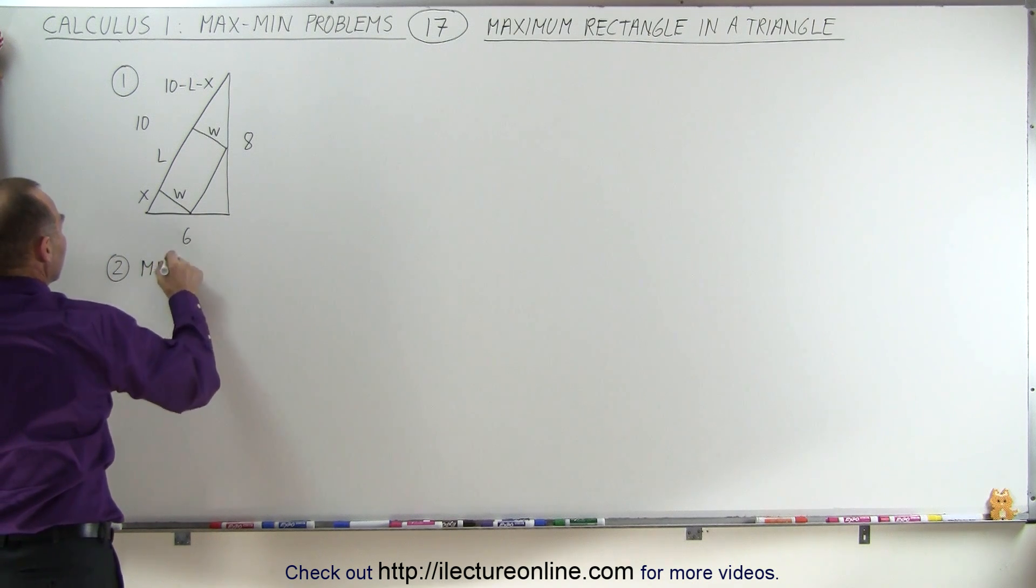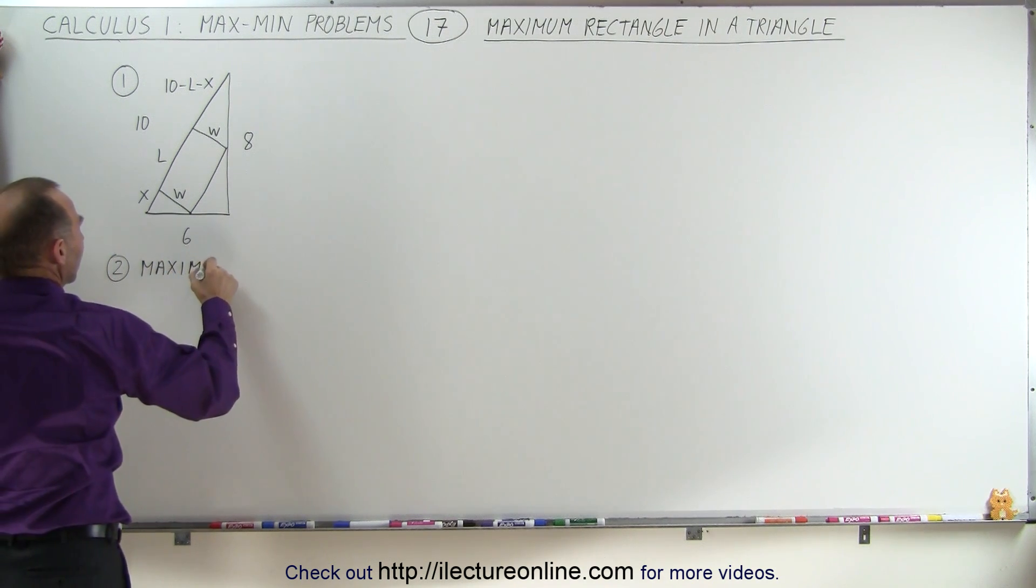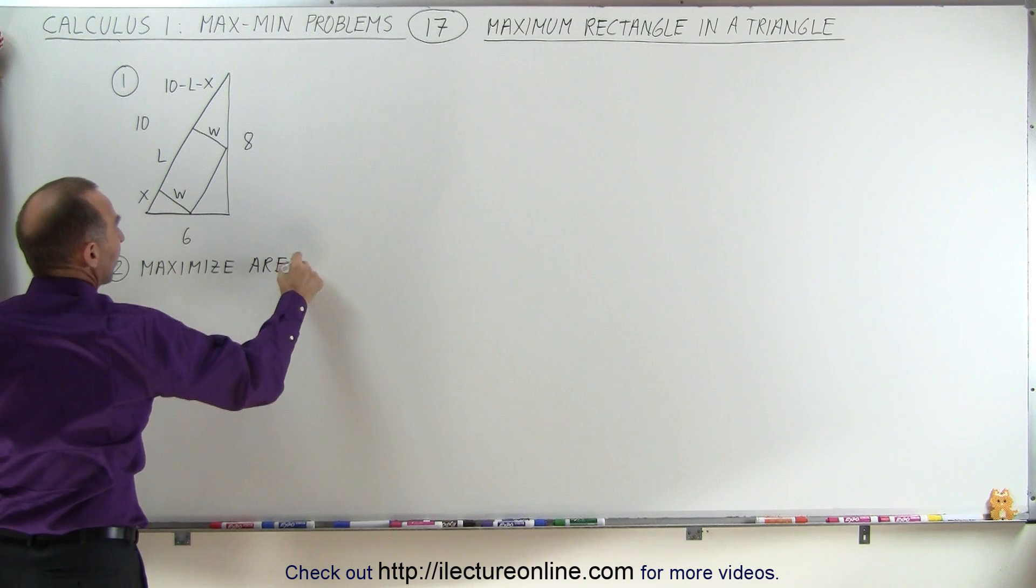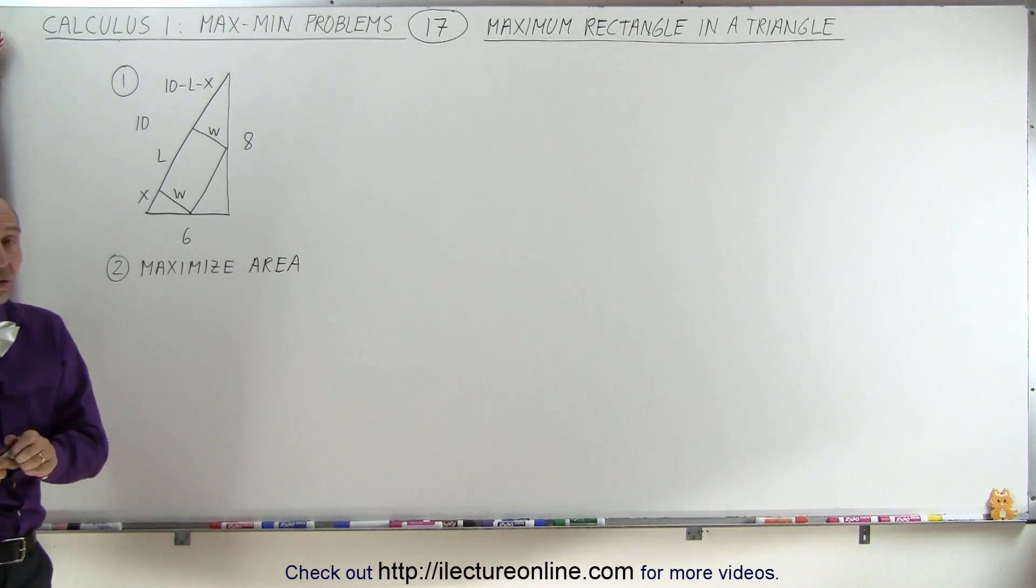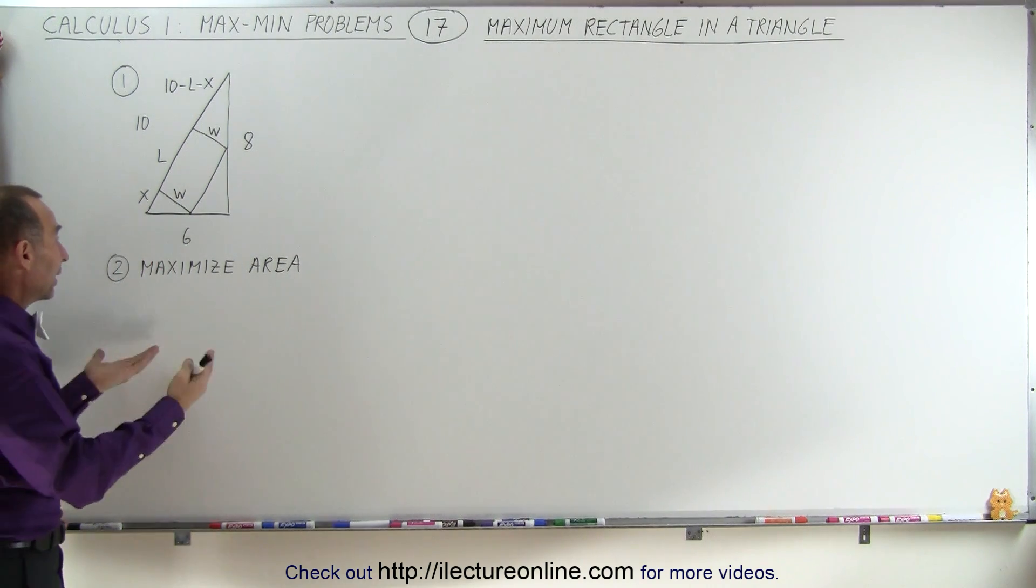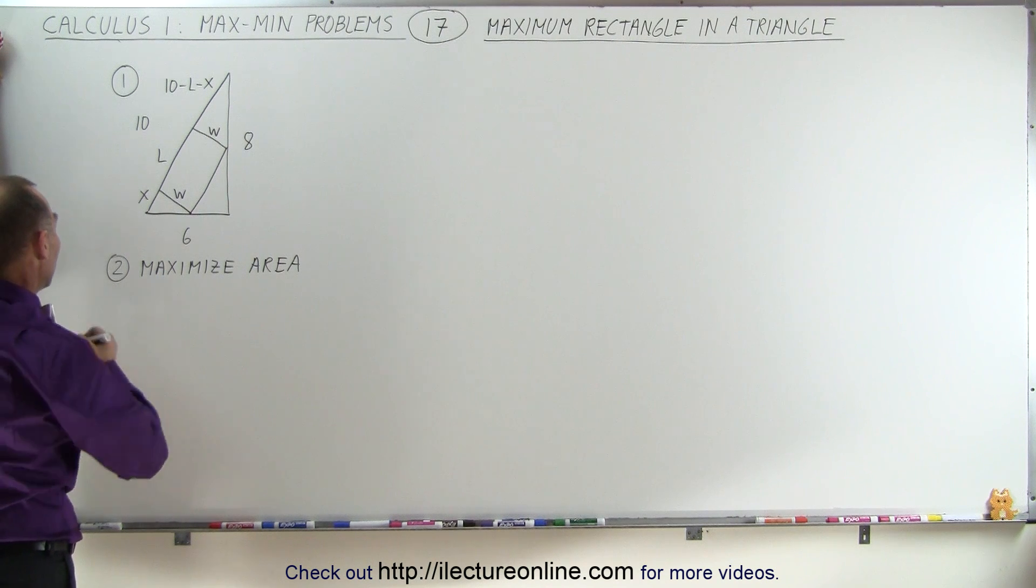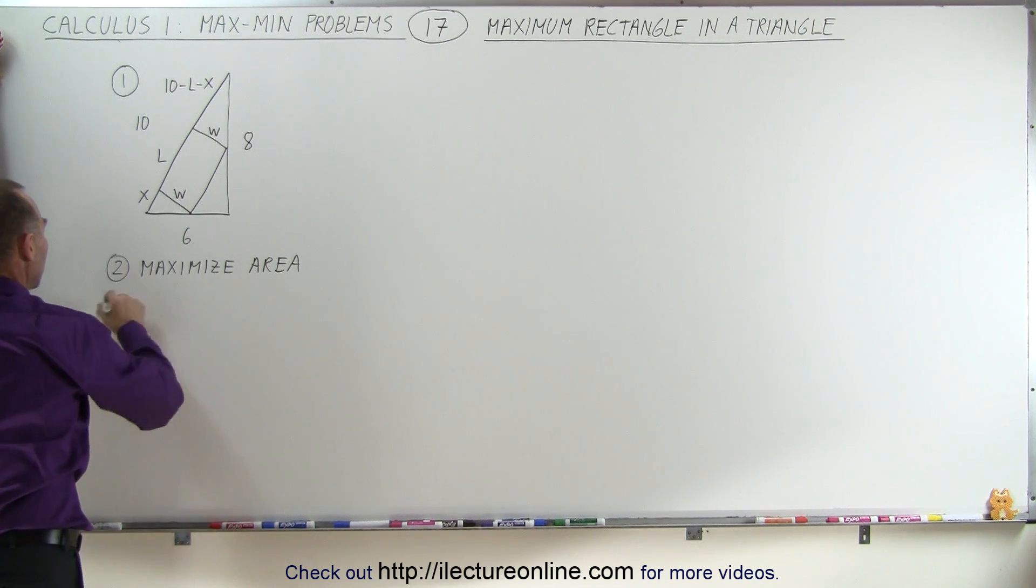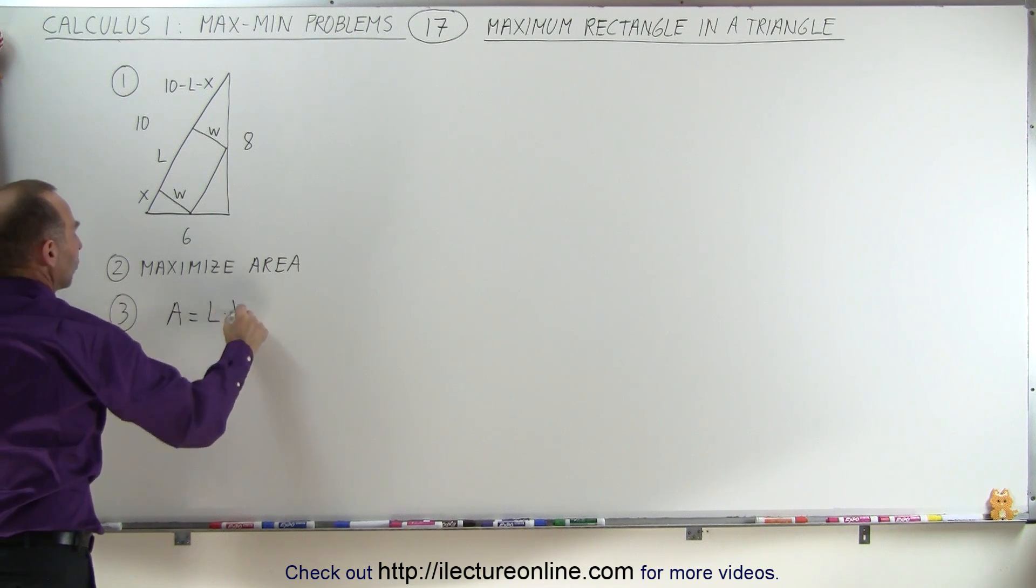We're trying to maximize the area of the rectangle, which means that we're going to need an equation to describe that area. And for a rectangle, it's simply length times width. So for step 3, the equation is the area is equal to length times width.